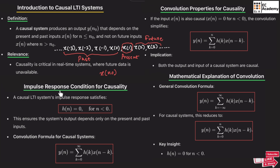Now let us understand the impulse response condition for causality. A causal LTI system's impulse response satisfies the condition where h(n) equals 0 for n less than 0. This is the condition for causality in impulse response, and it ensures the system's output depends only on the present and past input and not on future inputs.